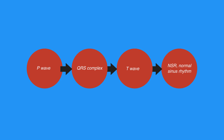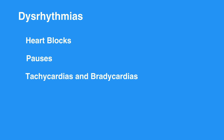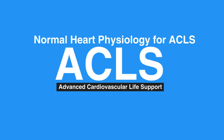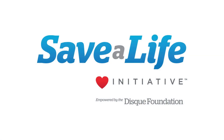Abnormalities in the conduction system can cause delays in the transmission of the electrical impulse and are detected on the ECG. These deviations from normal conduction can result in dysrhythmias, such as heart blocks, pauses, tachycardias, bradycardias, and dropped beats. This concludes our lesson on normal heart physiology for ACLS. Next, we will review the ACLS survey.